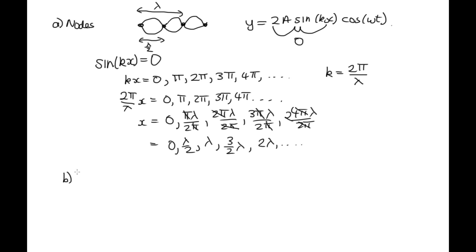OK, B, we're then asked to find antinodes. So these antinodes occur halfway between the nodes. So they occur on these red crosses here where we've got the maximum amplitude.